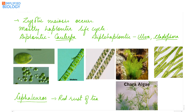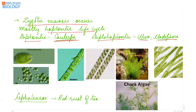Most green algae have a haplontic life cycle, meaning the main part of the life cycle is the haploid gametophyte, while the sporophytic generation is reduced and represented by a single cell — the zygote — which immediately undergoes meiosis, so zygotic meiosis occurs. A diplontic life cycle can be seen in Chloropa, while a diplo-haplontic life cycle can be seen in Ulva and Cladophora. Examples of green algae are Chlamydomonas, Chlorella, Ulothrix, Spirogyra, Cladophora, Ulva, and Chara.